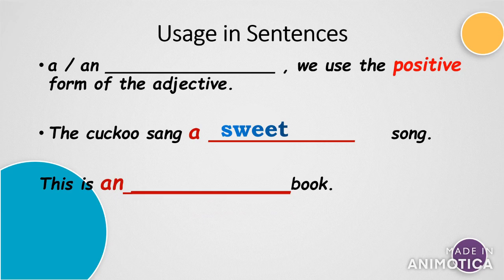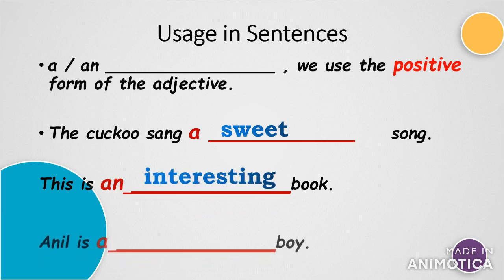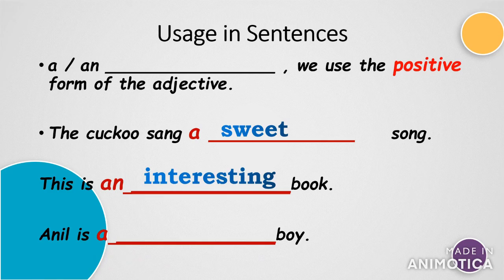'This is an ___ book' — interesting. 'Anil is a ___ boy.' In all these examples we have seen the articles 'a' and 'an' coming in the sentence, wherein we have used the positive form of the adjectives.